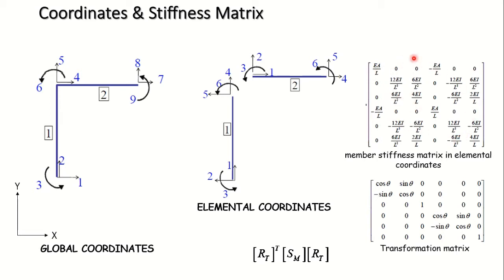The stiffness matrix in elemental coordinates is 6 by 6. Whenever an element's direction is parallel to the global x direction, no transformation is required — the element stiffness matrix in local coordinates is the same as in global coordinates.